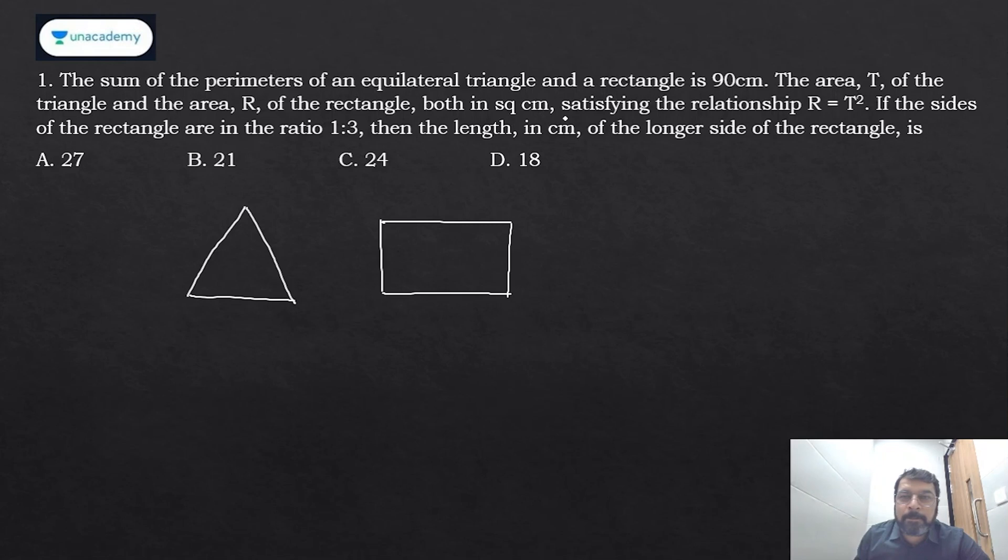Sum of perimeter is 90, and area T of the triangle and area R of the rectangle gives a relation R = T². Also, it is given that sides of rectangle are in the ratio 1:3, so let's say this is x, this will be 3x. Let's say the side of triangle is a.